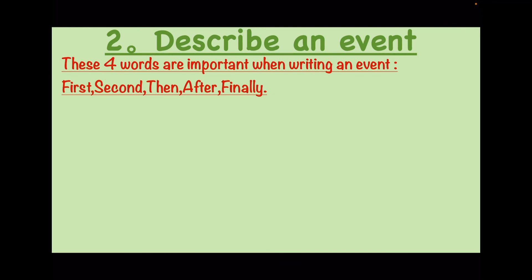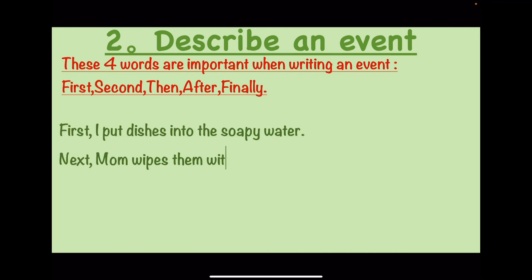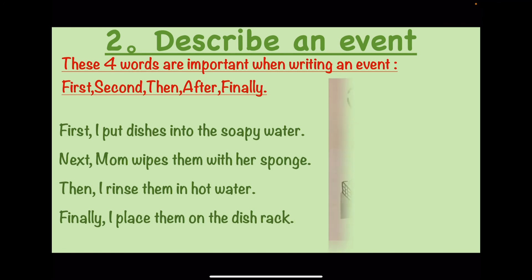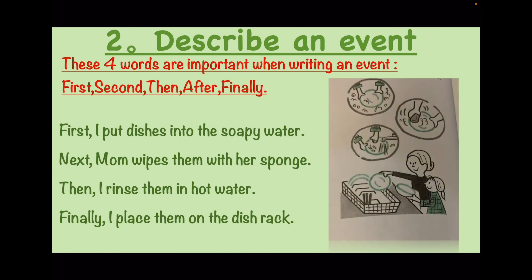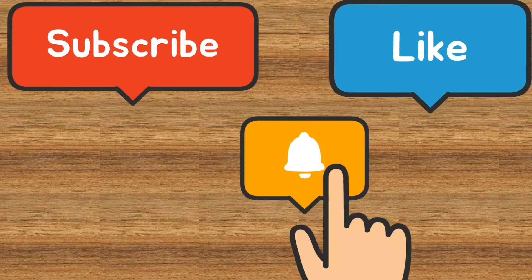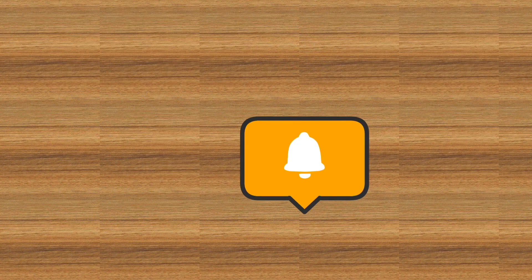Next, describe an event. These four sequence words are important when writing about an event. Here's an example: A girl is helping her mom wash the dishes. First, I put the dishes into the soapy water. Next, mom wipes them with her sponge. Then, I rinse them in hot water.